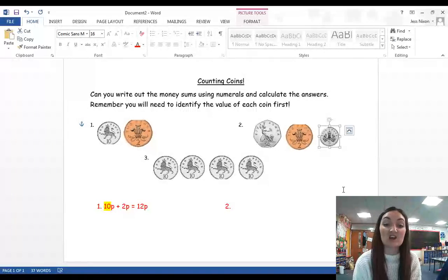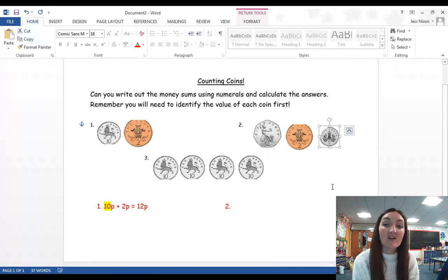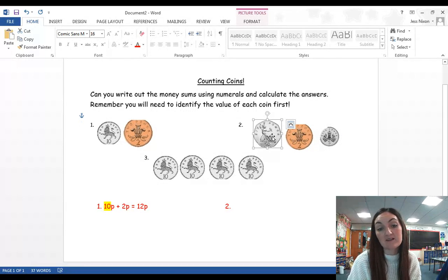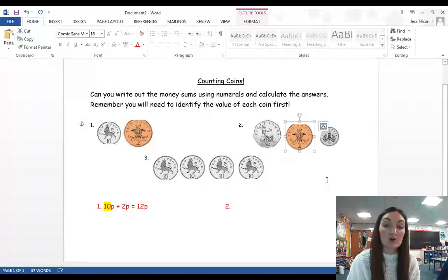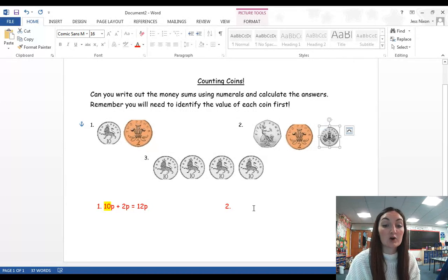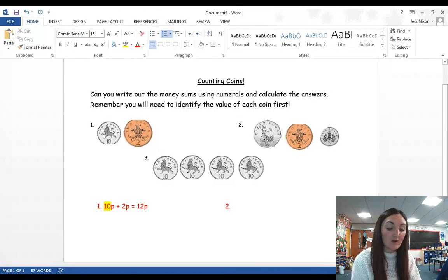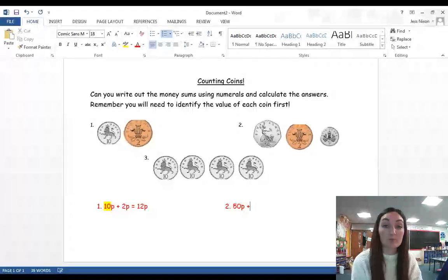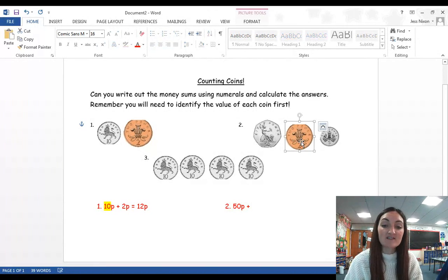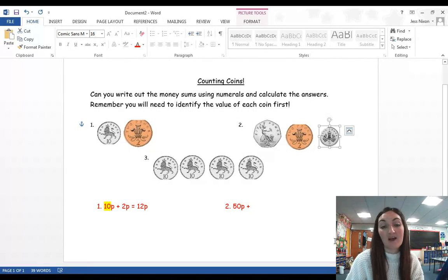Now, what you might want to do here, you might want to write the values of the coins underneath, and then write your sum in order of the size of the numbers. Now, I can see I have a 50 pence coin, a 2 pence coin, and a 5 pence coin. And I know that 50 is the biggest number there. So, I'm going to write 50 pence, then I must remember my add sum because I'm adding the numbers together.